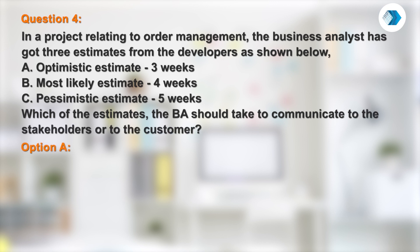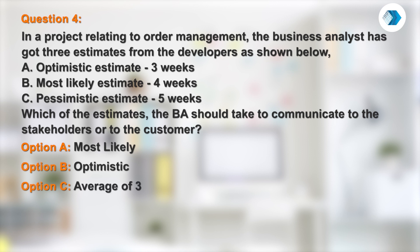Option A: the most likely one. Option B: the optimistic one. Option C: average of the three. Option D: none of these.